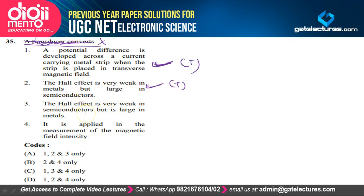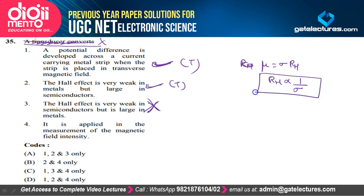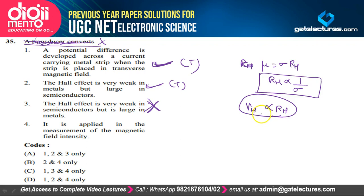The Hall effect is strong in semiconductors while weak in metals because R_H is inversely proportional to sigma (conductivity). Since conductivity is much less in semiconductors compared to metals, R_H attains a very large value in semiconductors, making the Hall voltage V_H stronger in semiconductors than in metals. The Hall effect is also applied in the measurement of magnetic field intensity. Statements 1, 2, and 4 are true — option D is correct.